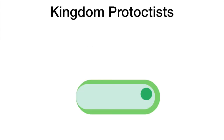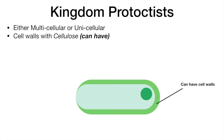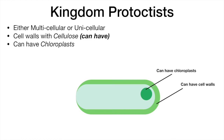Protoctista can either be multicellular, in the form of seaweed, or unicellular. All their cells have nuclei. Cells may or may not have cell walls and chloroplasts. Thus, some of them feed by photosynthesis and some feed on organic matter.